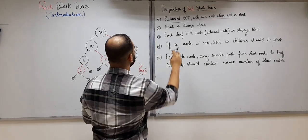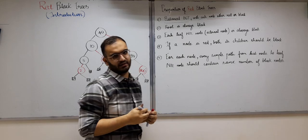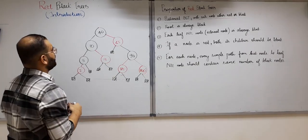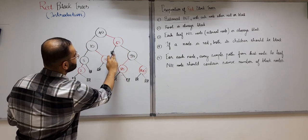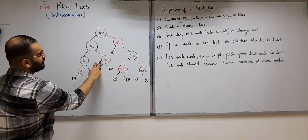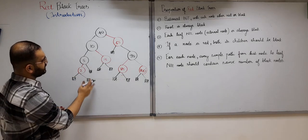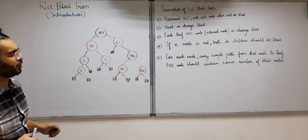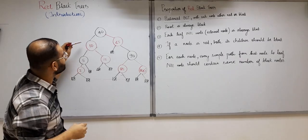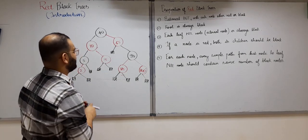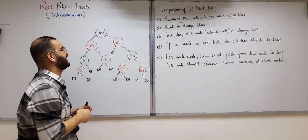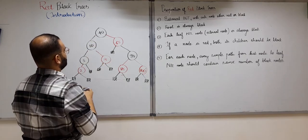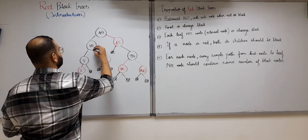The fourth property says that if a node is red, both its children should be black. Looking at all red nodes: 65 is red — are both its children black? Yes, the external node and 90 are both black. What about 15? Yes, both are black. Node 2? Both are external nodes, so obviously black. Node 85? Both are black external nodes. But node 10 is red and has one child that is red — so this violates the fourth property. If we make 10 black, it becomes a red-black tree again.